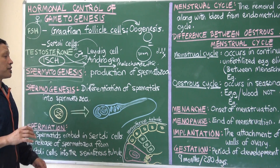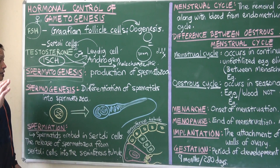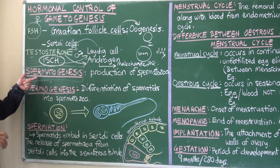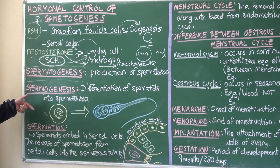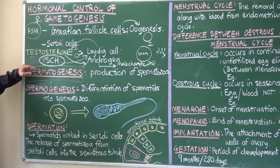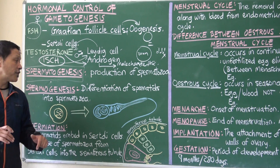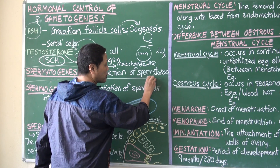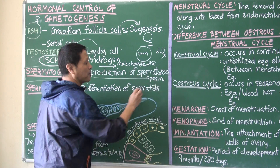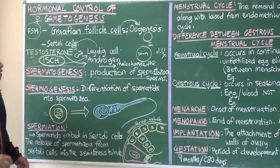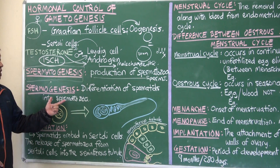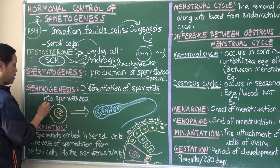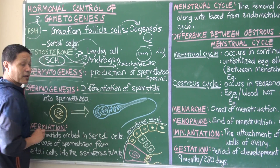Androgen or testosterone helps in spermatogenesis. Next we will look at three terms — spermatogenesis, spermiogenesis, and spermiation — which are very close and can cause confusion. Spermatogenesis is the production of spermatozoa, in short, just sperms. And spermiogenesis is the differentiation of spermatids into spermatozoa.